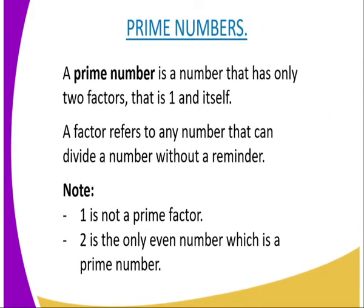Let us go to prime numbers, where we see a prime number is a number that has only two factors, that is 1 and the number itself. A factor refers to any number that can divide a number without a remainder.